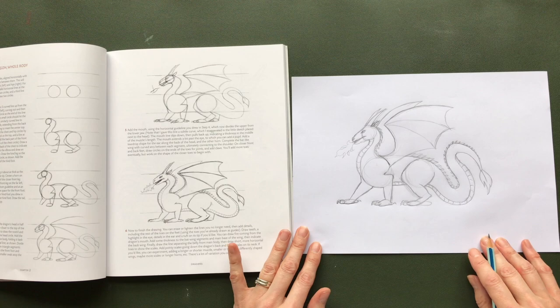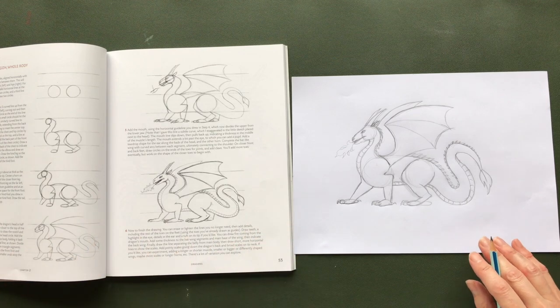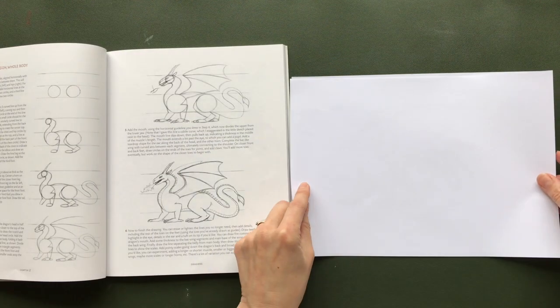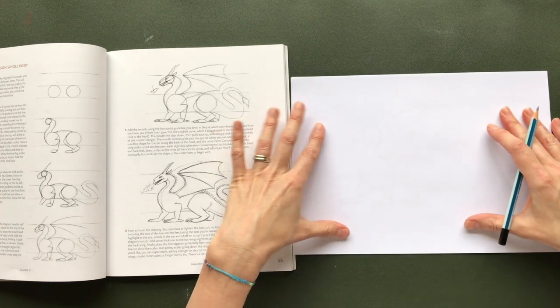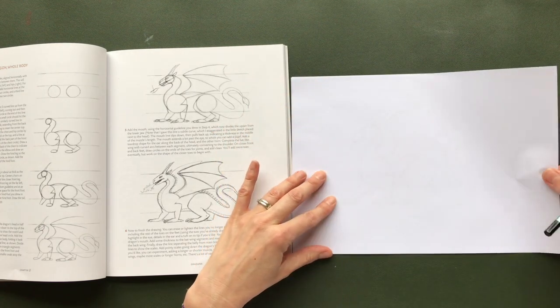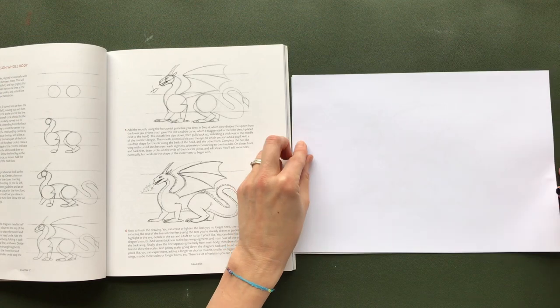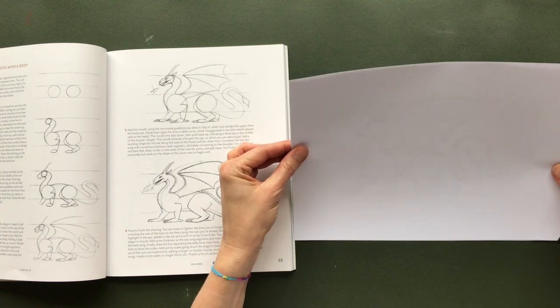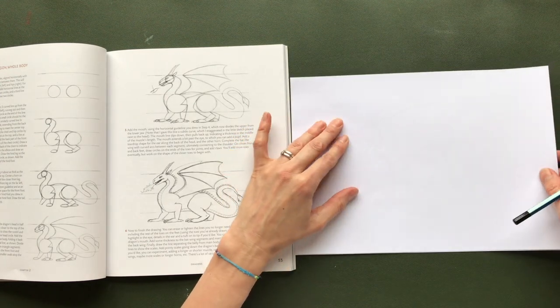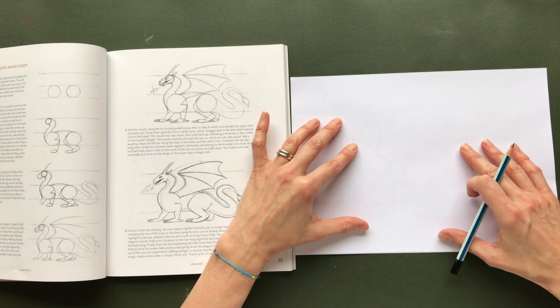And what I am going to do now is take another piece of paper. I'm hoping that I can see through it enough, which I can. This is quite a thick piece of paper. You can always put this up against a window to have a look at your shapes.